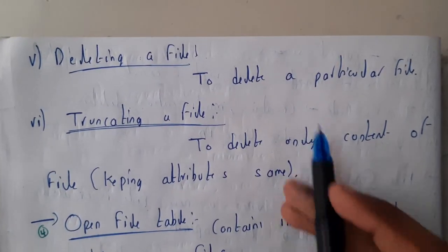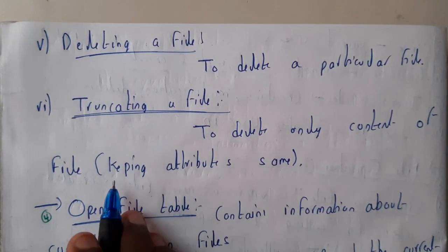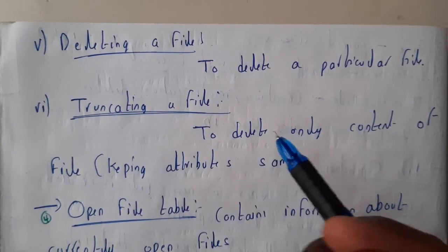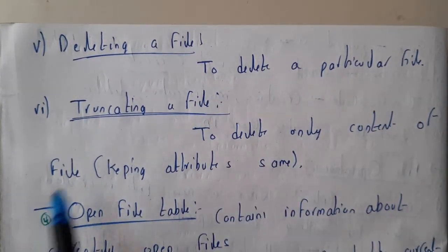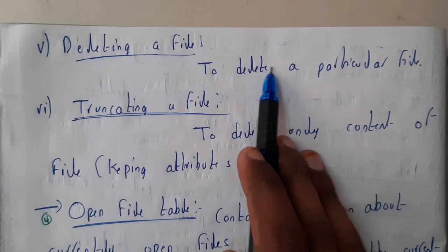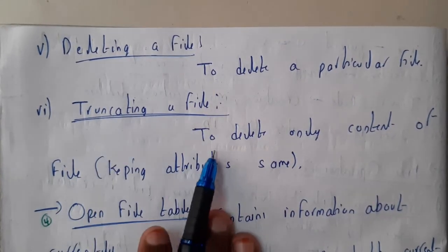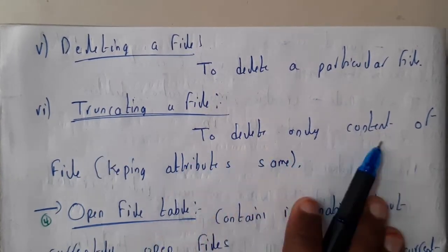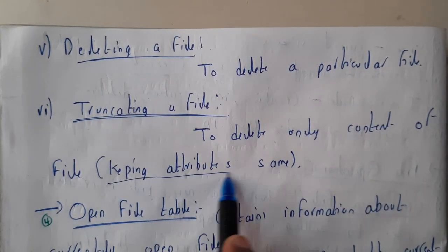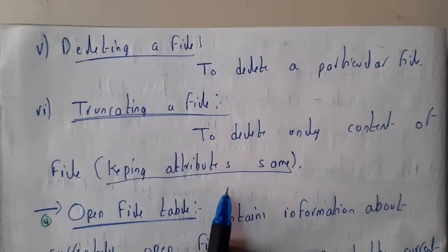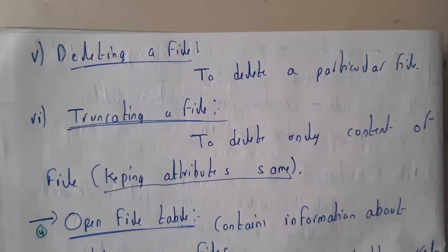The next operations are deleting a file and truncating a file. There is a small difference between delete and truncate: delete means you delete the whole file, whereas truncate means you delete only the content of the file and keep the attributes the same.